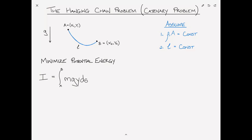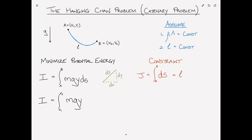The other thing we see in this problem is the idea of a constraint equation. The constraint is simply the length of the chain. We call this integral J, and J equals the integral of ds from A to B — the integral of the incremental path length — and that equals the length L. Using Pythagoras's theorem, ds can be written in terms of dx and dy. So I becomes the integral from x1 to x2 of mgy times the square root of 1 plus y-prime squared dx, and J similarly is the integral from x1 to x2 of the square root of 1 plus y-prime squared dx, equal to L.